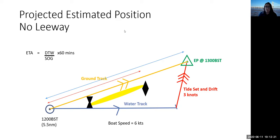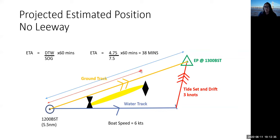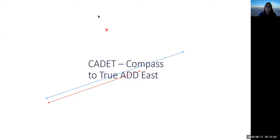The distance to waypoint is the red line; the speed over ground is the blue line — the blue line takes into account both boat speed and tide. With, say, 4.75 miles distance to waypoint divided by 7.5 knots speed over ground, times 60 minutes, gives 38 minutes. Looking at the plot, we're about two-thirds of the way down the line, so 38 minutes is a good answer.